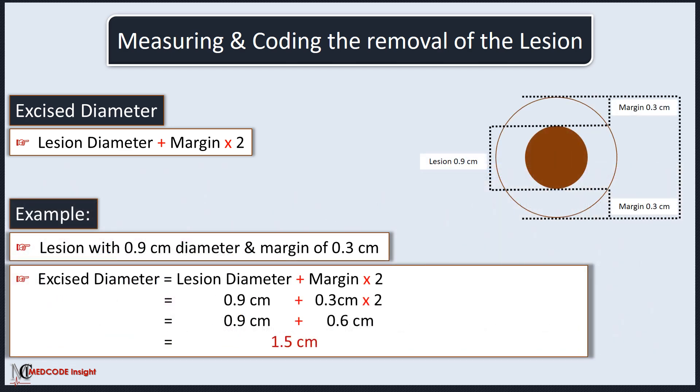Let's take an example where the lesion has an excised diameter of 0.9 cm and a margin of 0.3 cm is taken. To determine the excised diameter for coding, first multiply the margin by 2, giving us 0.6 cm. Then add this to the lesion diameter of 0.9 cm. After adding, our excised diameter is 1.5 cm.